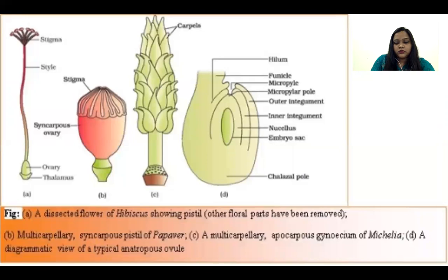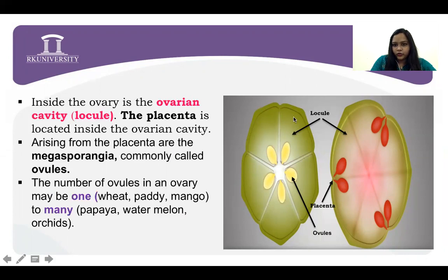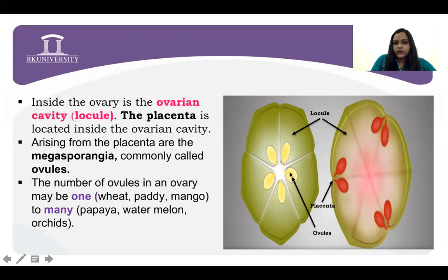Inside the ovary cavity there is a locule. If you take a transverse section of the ovary, there will be an ovary cavity — a hole or cavity into the ovary — that cavity is called locule. The placenta is the adjoining site where the ovule is attached. The ovule is attached to the placenta, which is inside the locule or ovary cavity.